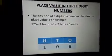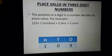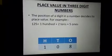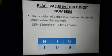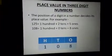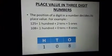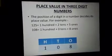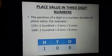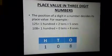Take another example 125. We can write it as 1 hundred, 2 tens, and 5 ones. Next 108. It can be written as 1 hundred plus zero tens plus 8 ones. This form of writing is also known as expanded form.